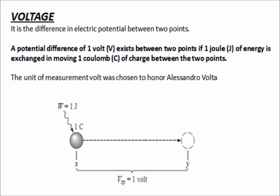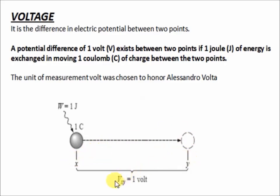The next topic is voltage. The definition of voltage is it is the difference in electric potential between two points. A potential difference of one volt exists between two points if one joule of energy is exchanged in moving one coulomb of charge between those two points. The unit of measurement, volt, was chosen to honor Alessandro Volta. So, 1 volt equals 1 joule of energy applied to 1 coulomb of charge.